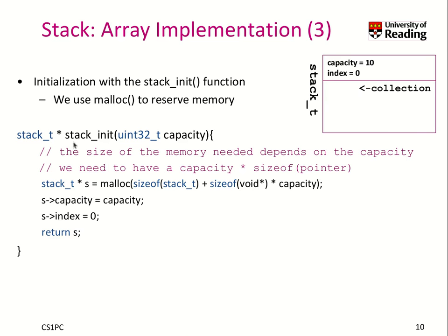How do we initialize the stack? We create a new function called stack_init with a capacity. It needs to allocate the data structure of type stack_t, and for each element in its capacity, we store one of these void star pointers. We create this element, set the index to zero at the beginning because we haven't stored anything, and point collection to the first element after our index. So we can store an arbitrary number of elements, whatever number was given to stack_init.